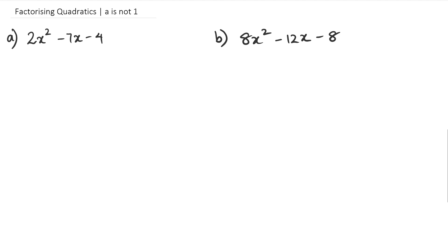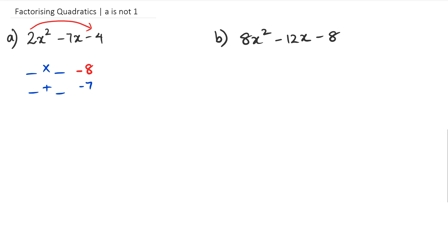Maybe if I get some time later on I'll explain to you why it works the way it does. Normally you look for two numbers that multiply to negative 4 and add up to negative 7. But instead of that there's going to be a slight extension. What we actually have to do is two times negative 4 first. When we do this, two times negative 4 gives us negative 8. So now we're looking for two numbers that multiply to negative 8 and add up to negative 7.